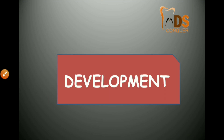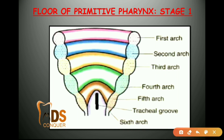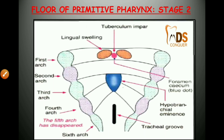The development of the tongue starts from the fourth to eighth week of intrauterine life and can be summarized into two stages. In stage one, both sides of the pharyngeal arches combine in the midline to form the floor of the primitive pharynx. In stage two, two swellings called lingual swellings are formed.